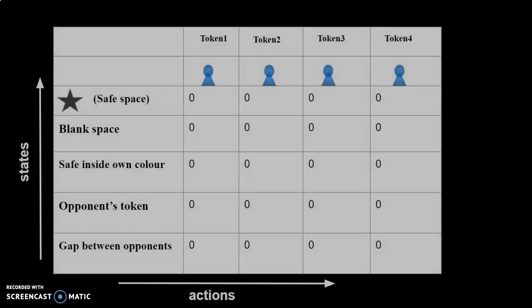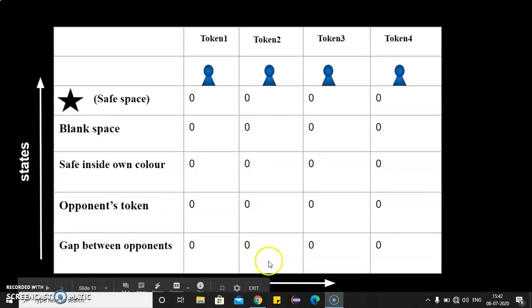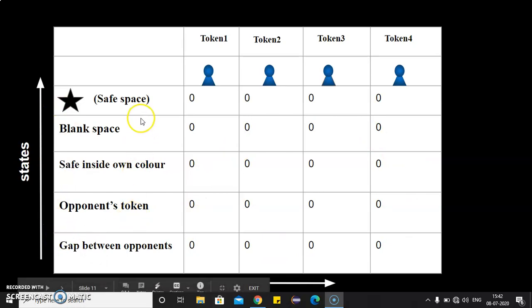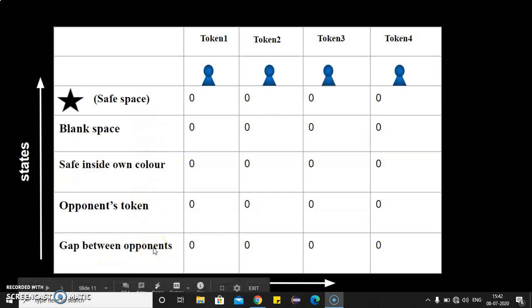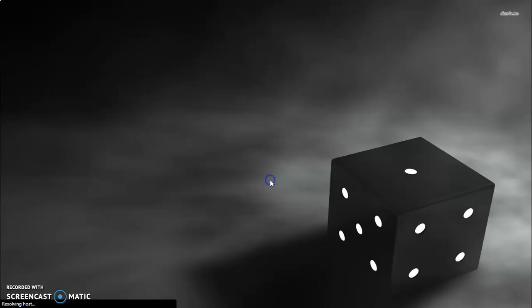To maximize rewards, Q-learning uses a lookup table called a Q-table that considers every situation and position of every token. In the beginning, all Q-values are zeros and they change themselves over time. On the Y-axis are the states — which can be safe space, blank space, safe inside own color, opponent's token, and gap between opponents. The X-axis has the actions which can be taken by token 1, 2, 3, or 4. These values are updated using Bellman's equation.